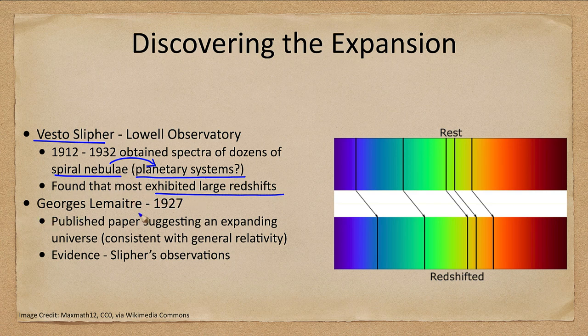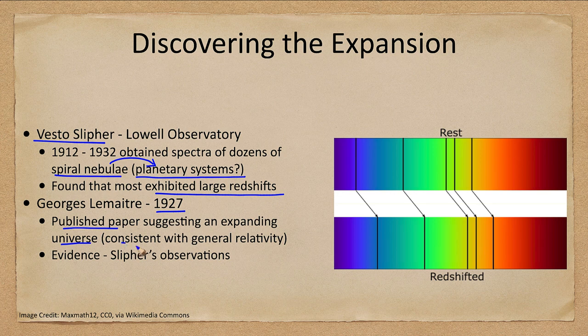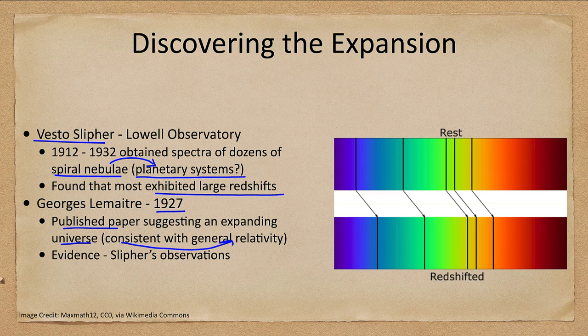And then following that in 1927 Georges Lemaitre published a paper suggesting an expanding universe. Now this is consistent with general relativity although general relativity was originally set up for a static universe which was what was believed at the time. You could easily explain an expanding universe under general relativity. And he used as evidence Slipher's observations.